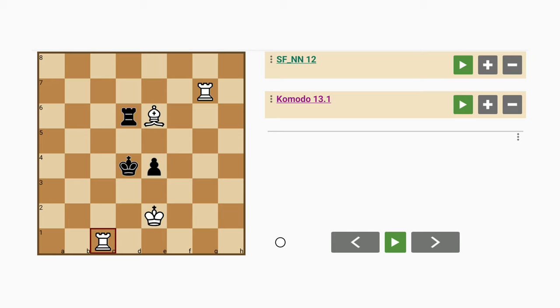The bishop on e6 is threatened, so maybe in this position white should play rook to d1 check, skewering the king against the rook in a sense.